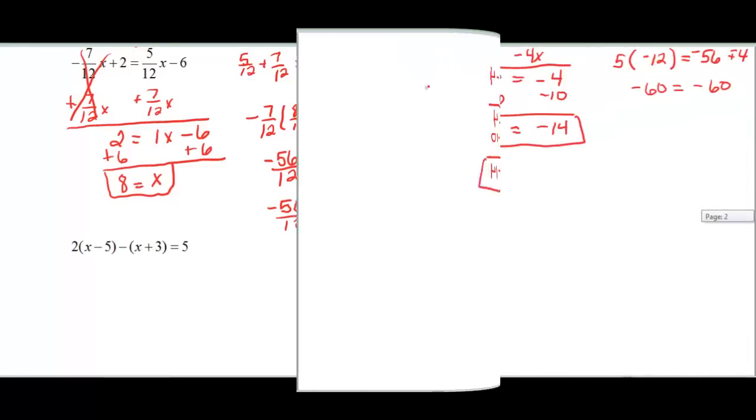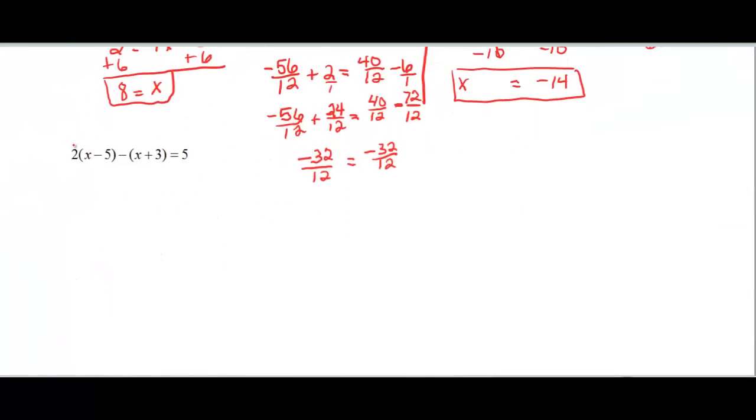And again, of course, we can check. We have to distribute the 2, but we also have to distribute this negative. So 2 times x is 2x. 2 times negative 5 is a negative 10. And then negative 1 times x would be minus x. And negative 1 times 3 would be minus 3 equal to 5. And now I have like terms all over the place, and I have to move things back and forth.